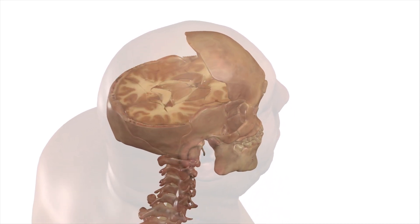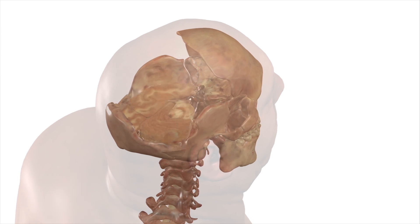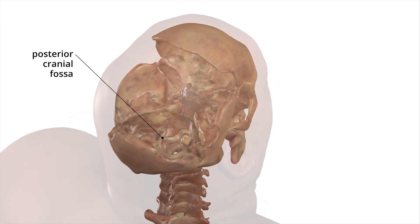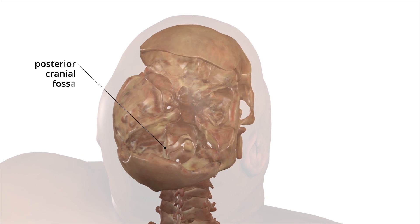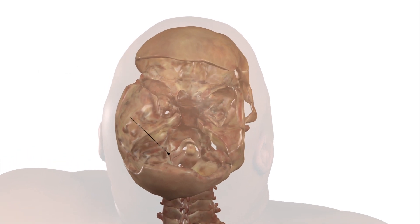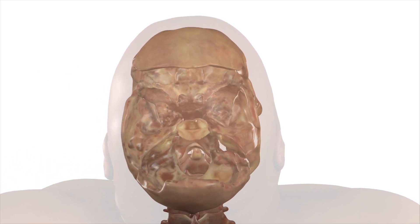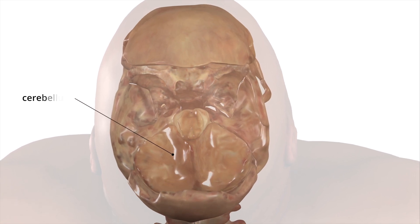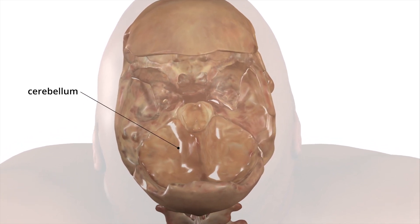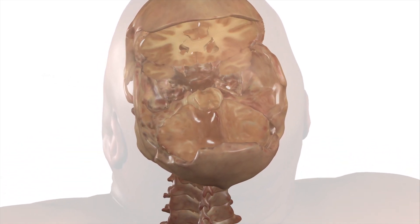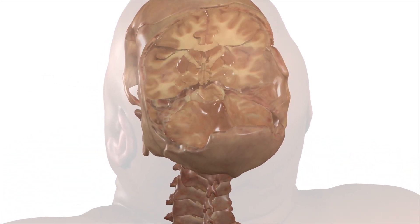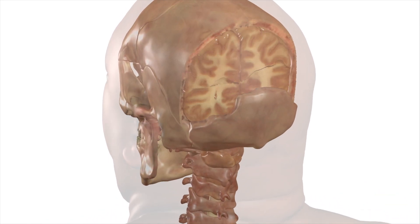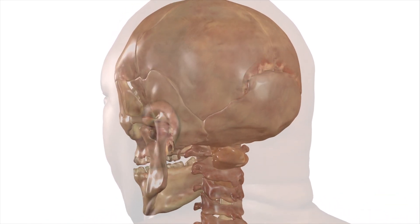The cerebellum is normally located within the posterior cranial fossa of the skull, but in a Chiari malformation, the lower part of the cerebellum — the cerebellar tonsils — extend through the foramen magnum into the spinal canal. This can cause compression of the brainstem and spinal cord and can also block the flow of cerebrospinal fluid, or CSF.